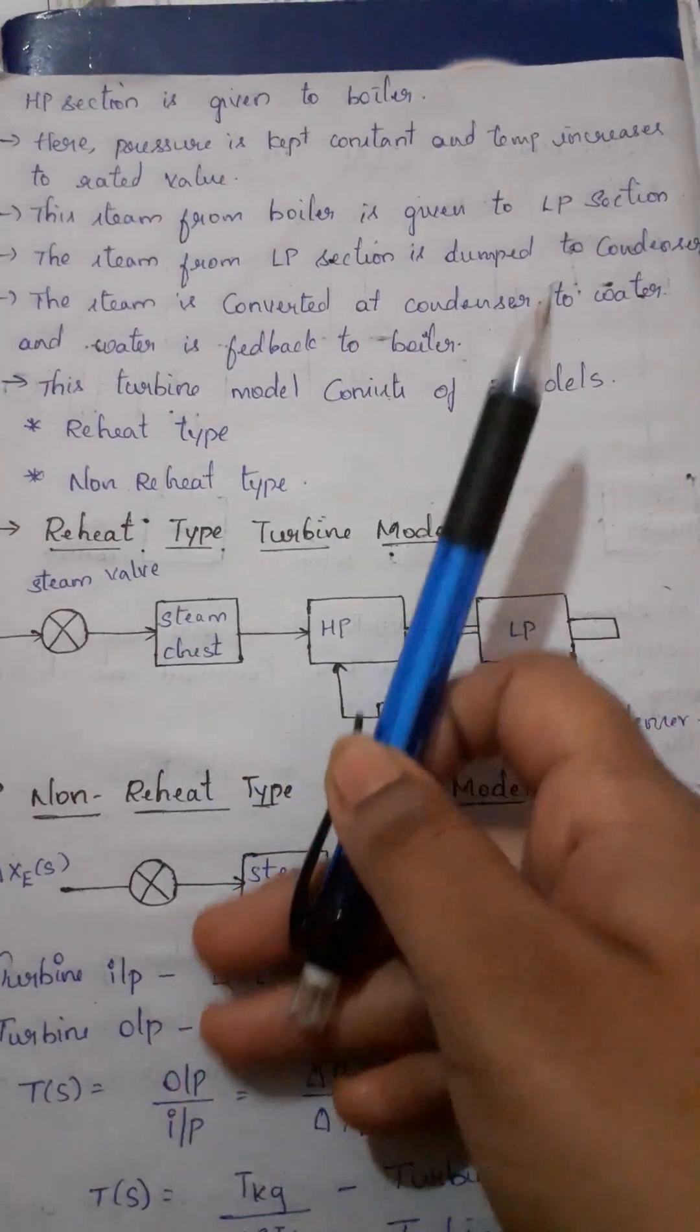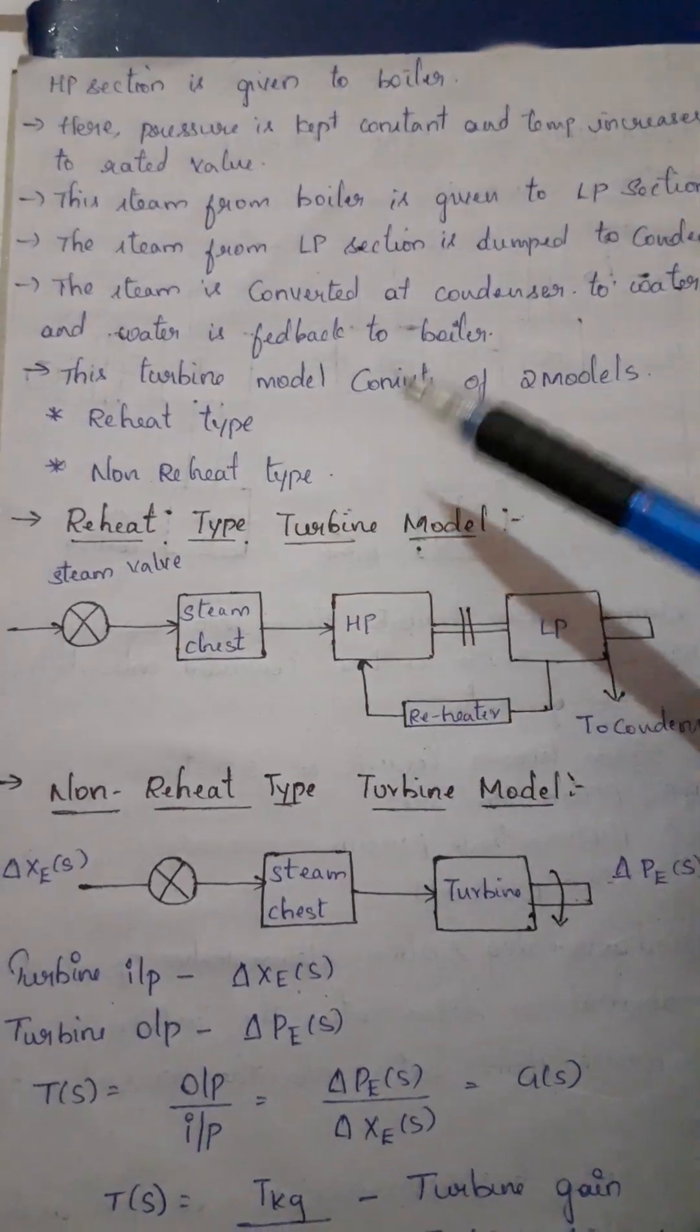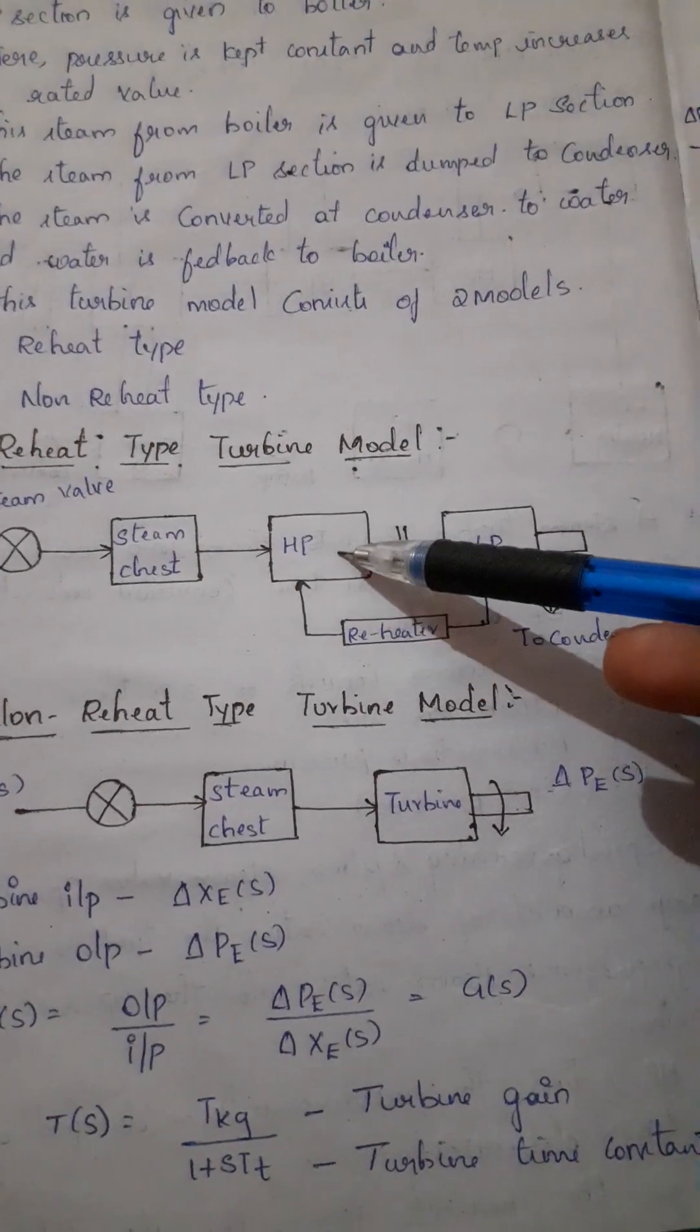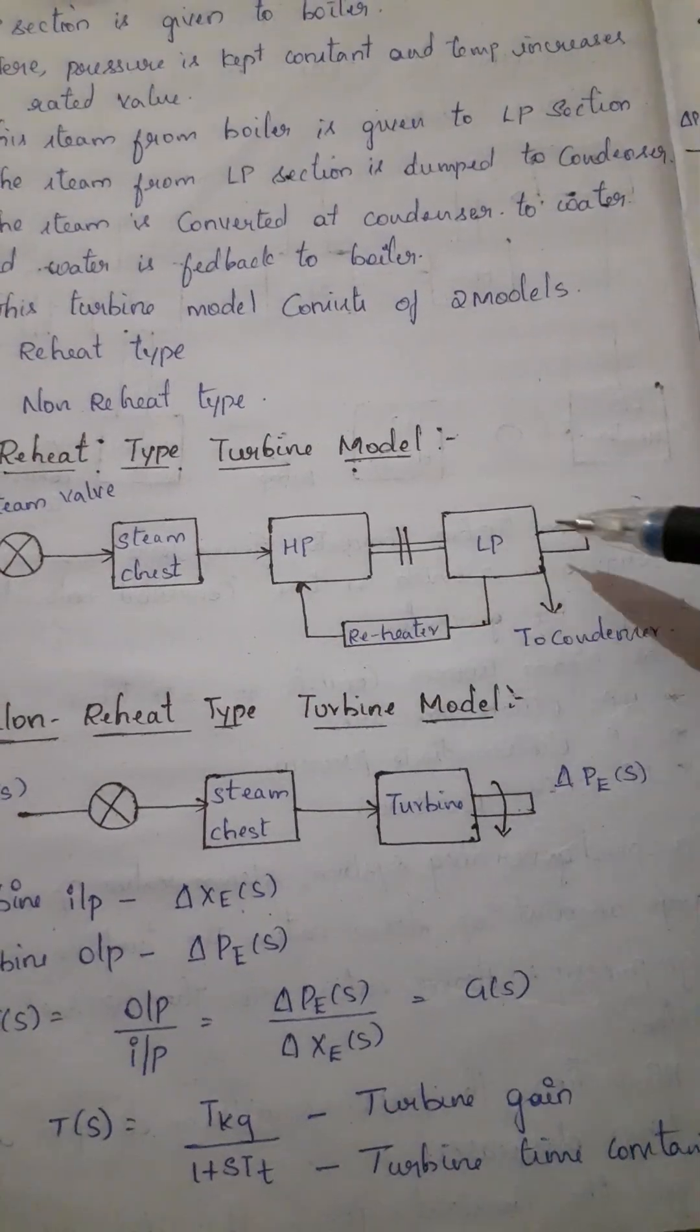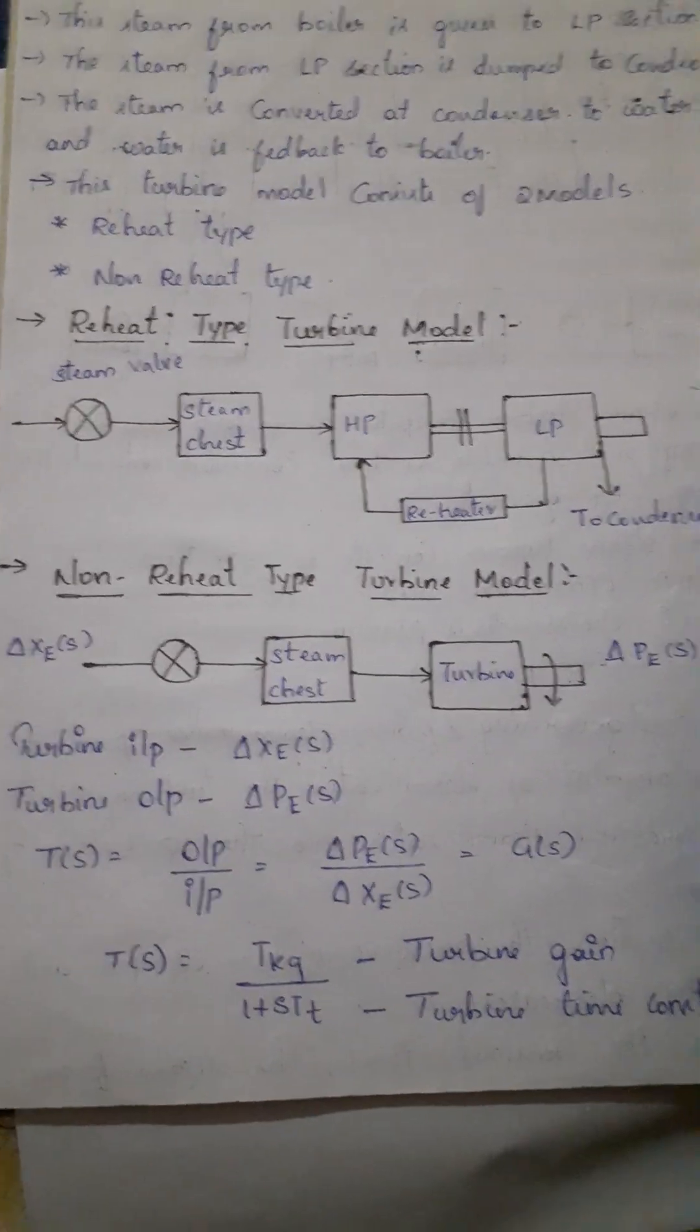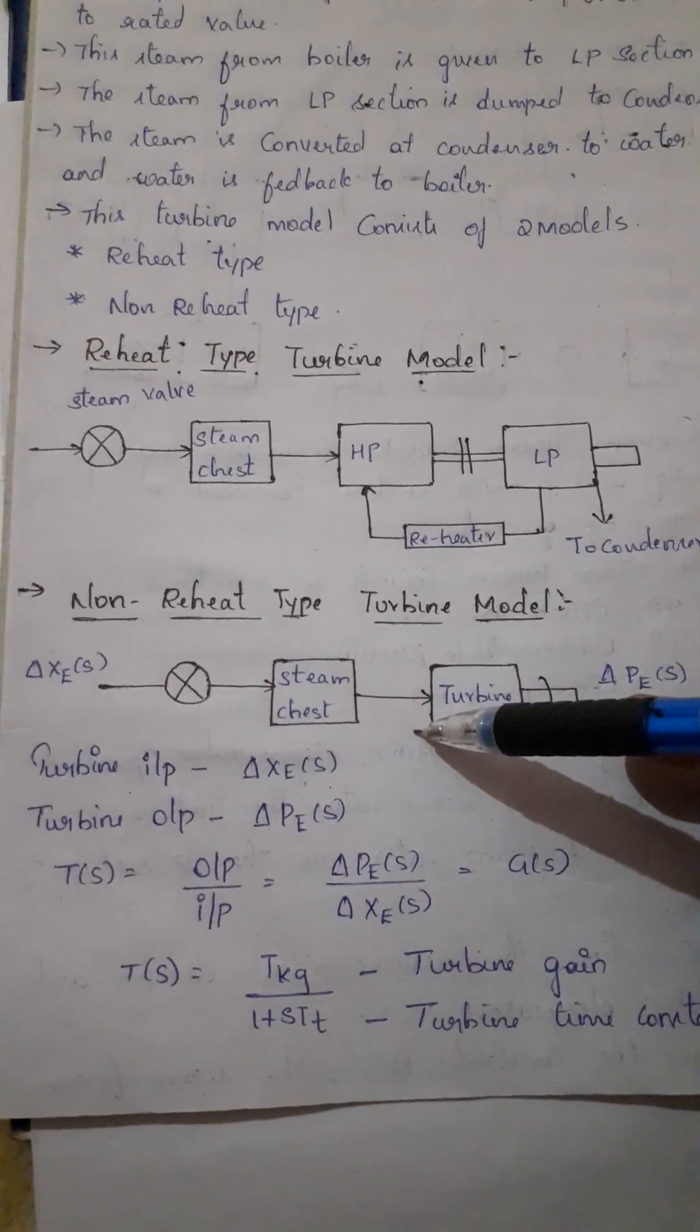This steam turbine consists of two models. One is reheat type and another one is non-reheat type. Here we have a reheat type with HP and LP. Then again we are going to the reheater. We have a condenser to reheat. Coming to the non-reheat type, in this case we have a reheat type.